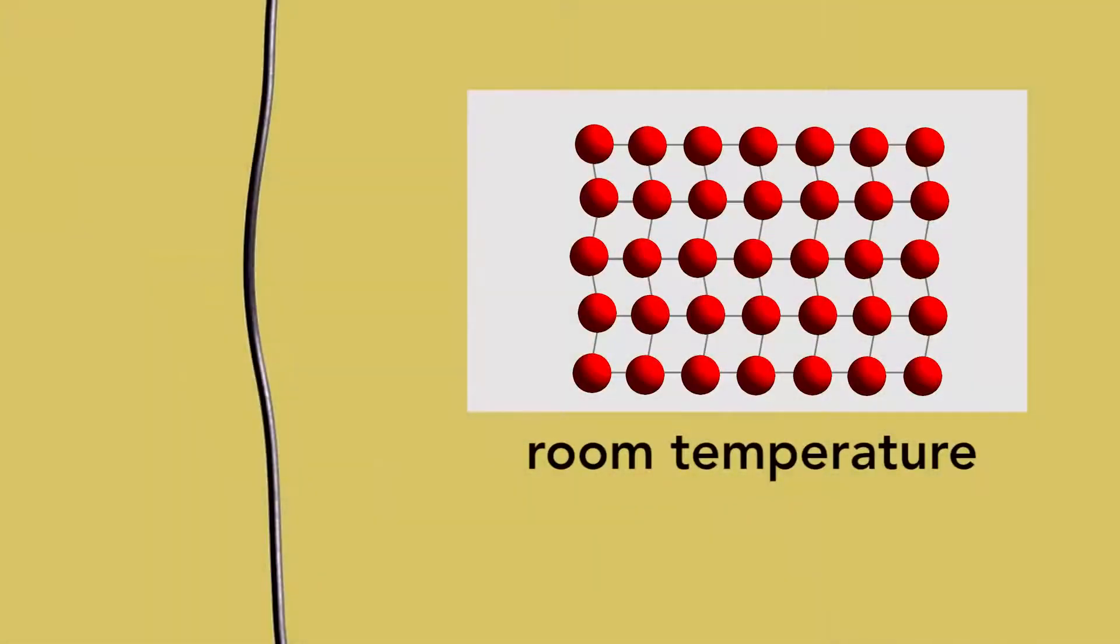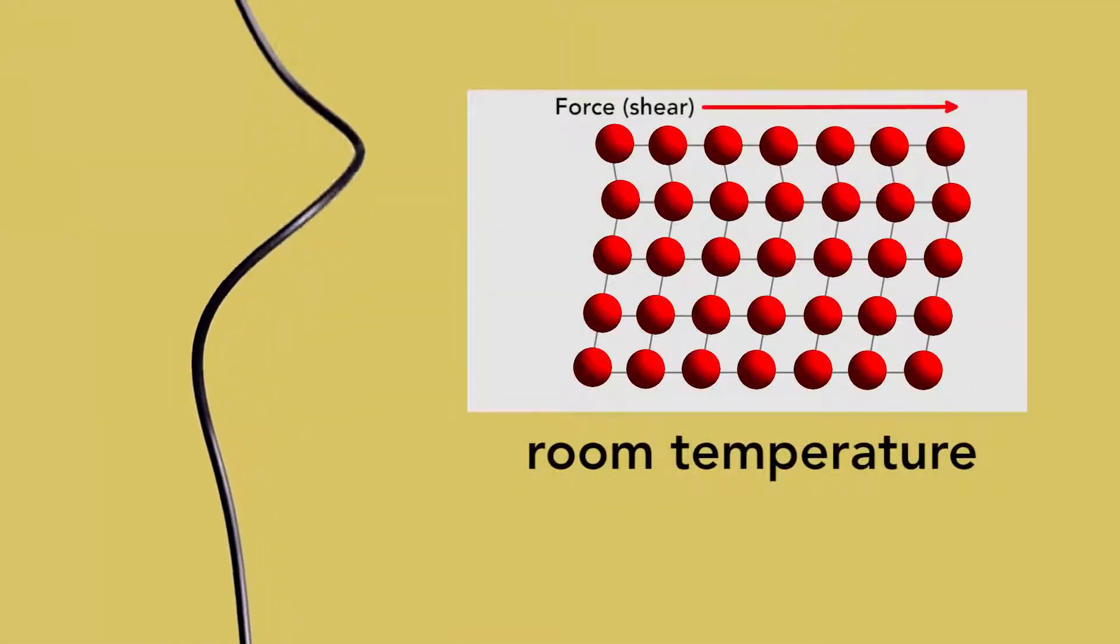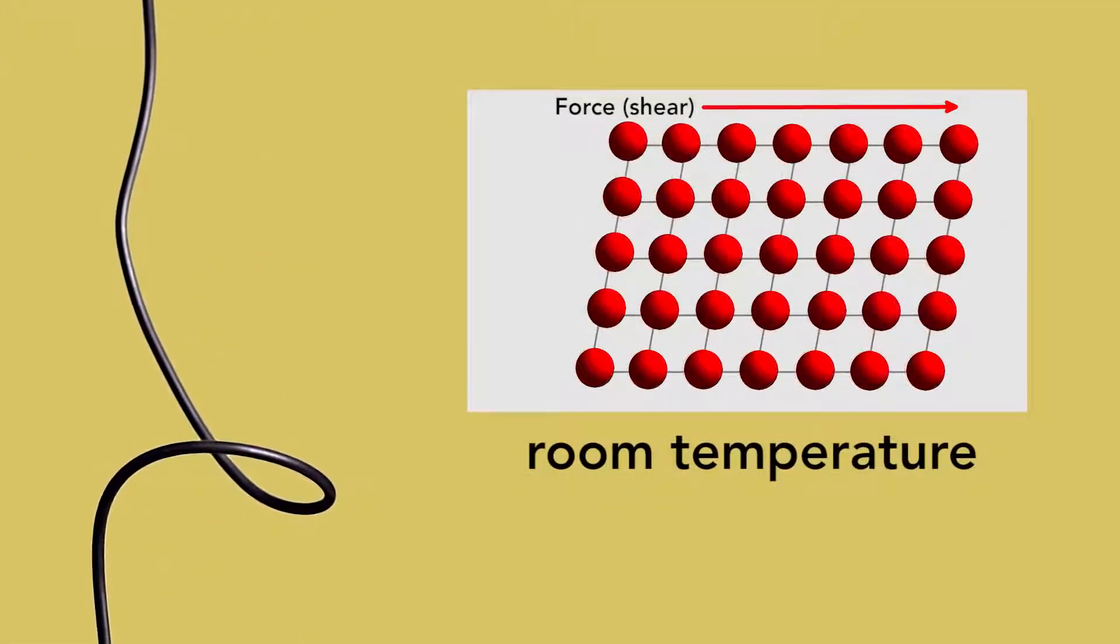For example, if I take the cooled nitinol and change its shape, some of the crystallites might experience a shear force across the top. Notice that in response, the atoms move and change the ratio of the two types of rhombuses. In this example, they all change to one type.